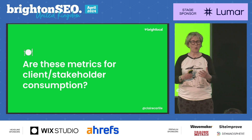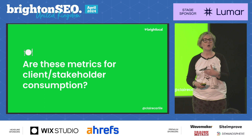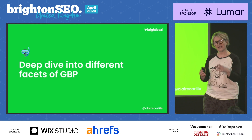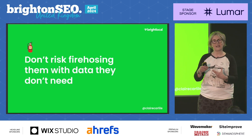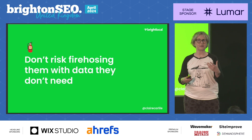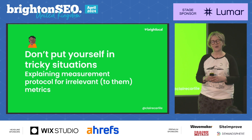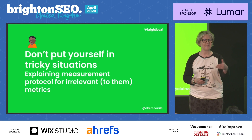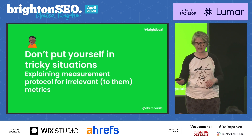Today we're going to run through quite a few different metrics. But before we start thinking about those metrics, we need to think about who they're for — are these metrics for our clients, for stakeholder consumption? Because we're going to dive into quite a few different facets of Google Business Profile, and we don't want to give our clients and stakeholders too much data that they're just going to drown in. If we're reporting on metrics that aren't important to the person, it's just best to leave those things out.